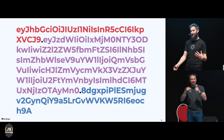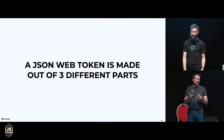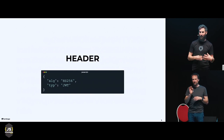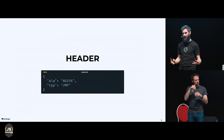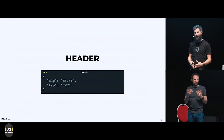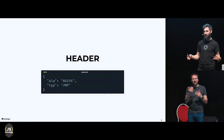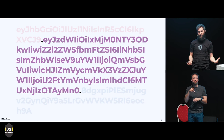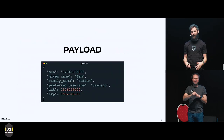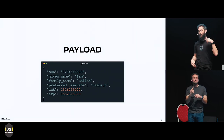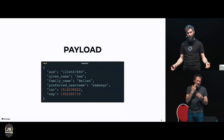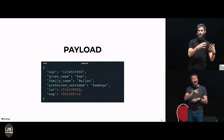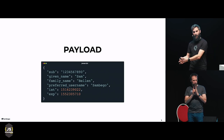It starts out with the first part, which is the header. This is just a base64-encoded JSON object, and what this JSON object contains is some metadata about the token itself — which algorithm is used to sign it, and the type, which is JSON Web Token. Then we get to the big blob in the middle, which is the payload. This is again a base64-encoded JSON object which can contain anything of importance to you — your subject, given name, family name, when it was issued, when it will expire.